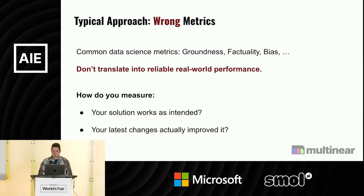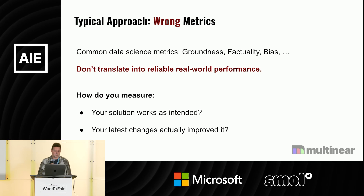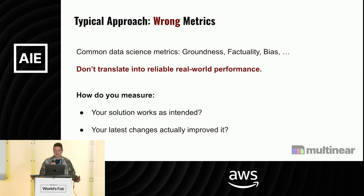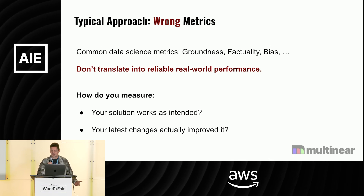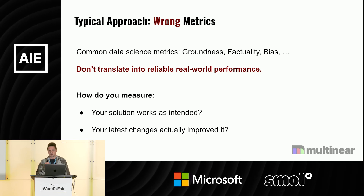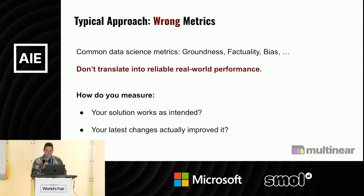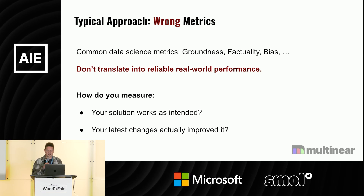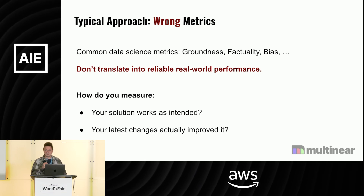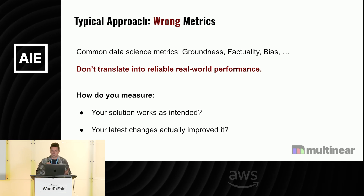People very often come to try solving this with the wrong approach. They start with data science metrics. It sounds reasonable, since it requires a data science approach of experimentation. And people start measuring groundedness, factuality, bias, and other metrics that don't really help you understand if your solution is working the right way — or if your latest change improves your solution in the right way for your users.